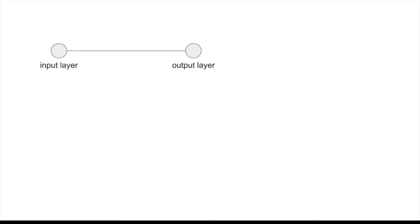In this video we're going to be looking at a neural network that consists of two layers — the input and the output layers — with one node each. There is no bias unit, and there is just one single weight between the two nodes. The output activation is defined as the product of the input value and the weight, and there is no non-linearity or activation function involved.